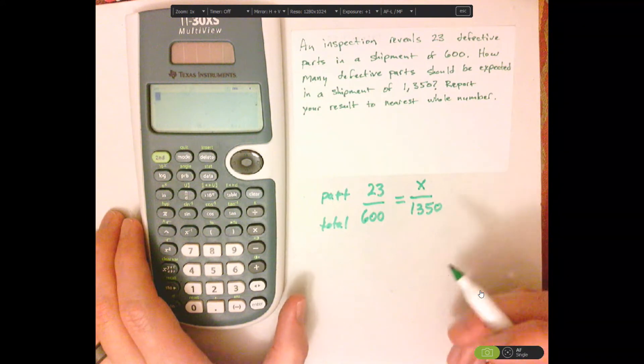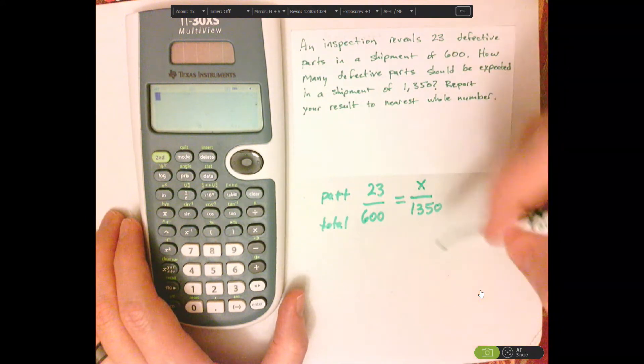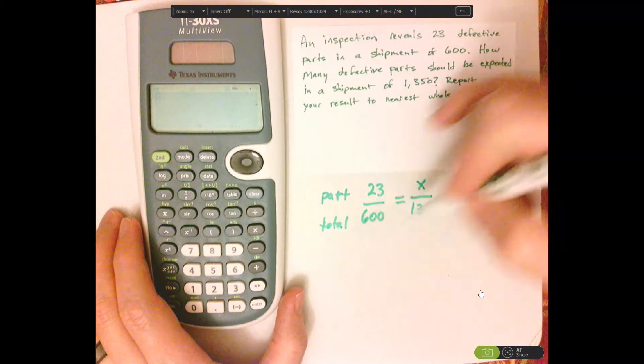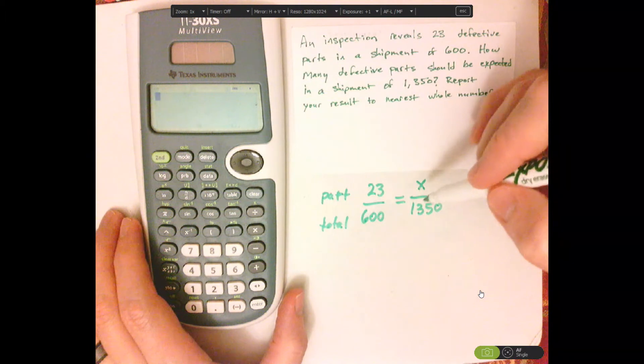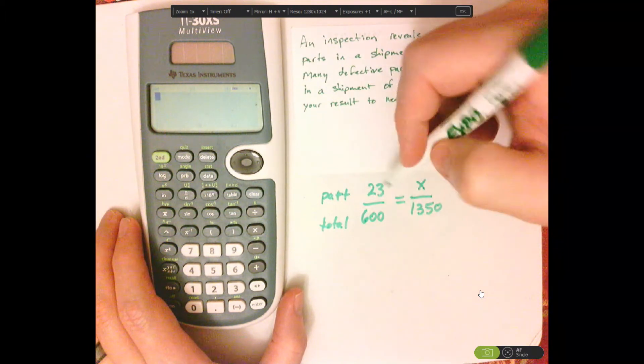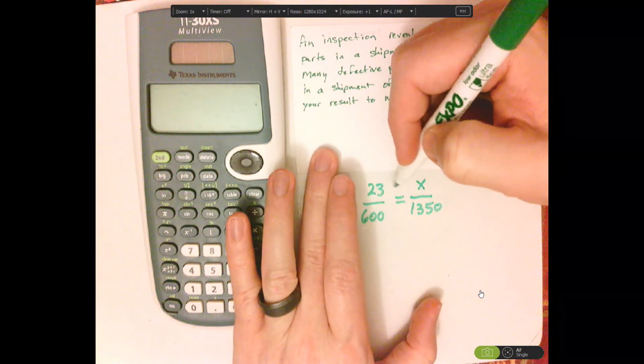Now, to solve a proportion, what you're going to do is multiply, cross-multiply and divide. Here with a proportion, it's always the same.